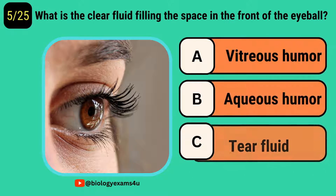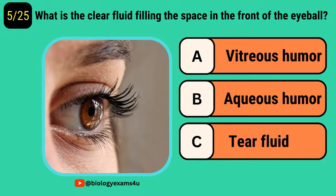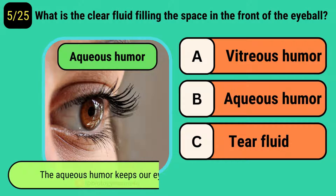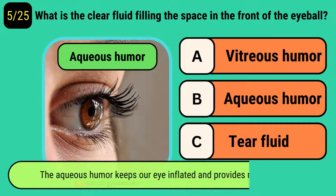What is the clear fluid filling the space in front of the eyeball? The answer is aqueous humor. Aqueous humor keeps our eye inflated and also provides nourishment to the eye.